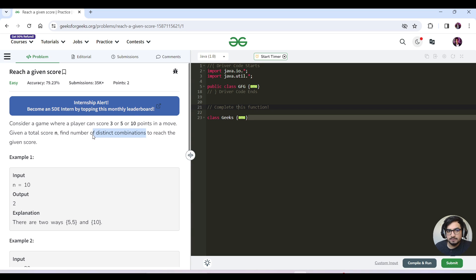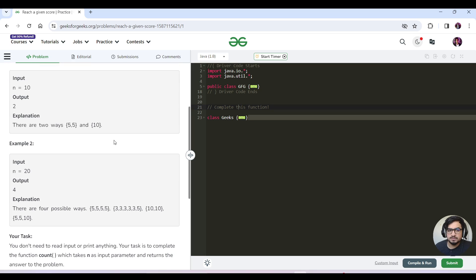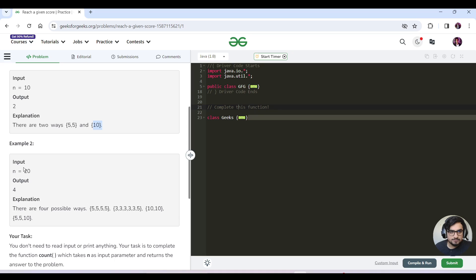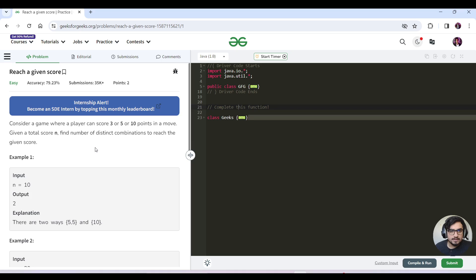There is an important statement they have made that we need to find the distinct combinations and not the permutations. Let us see the input and output. For 10, they have said the output is 2, that is 5+5 and 10. Similarly, for 20, they have given the output like this.